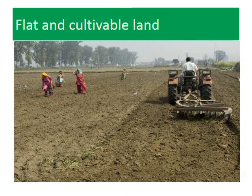The first factor is flat and cultivable land. Settlements grow in areas that are flat and where the land is cultivable. Settlements do not grow on steep hillsides or marshy lands.